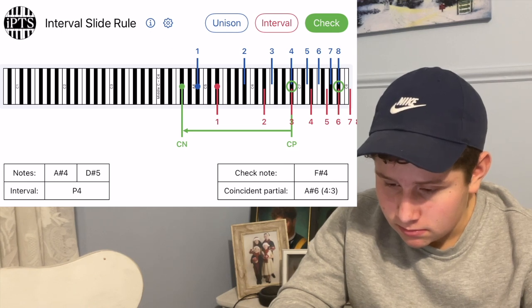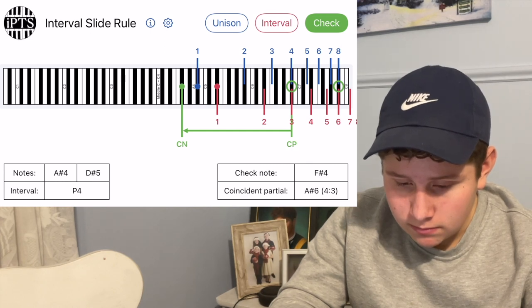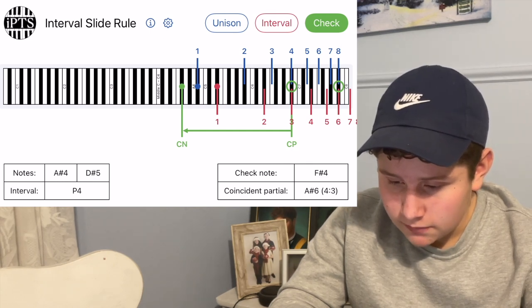So the interval is A-4? A-sharp 4, yeah. Oh, A-sharp 4 and? D-sharp 5. D-sharp 5, yeah. And then the check note for that interval? F-sharp 4. Excellent.